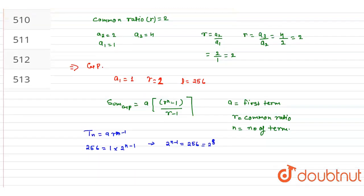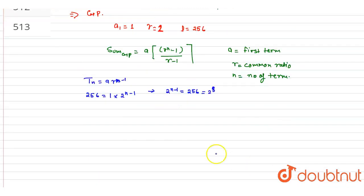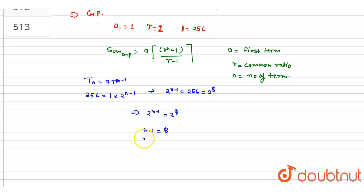We now have the equation 2 power n minus 1 is equal to 2 power 8. So we can write n minus 1 is equal to 8, which gives us n is equal to 9. So we now have the number of terms, which is 9.